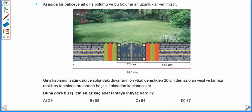Aşağıda bir bahçeye ait giriş bölümü ve bölüme ait uzunluklar verilmiştir. Giriş kapısının sağındaki ve solundaki duvarların ön yüzü genişlikleri 20 cm'den az olan yeşil ve kırmızı renkli eş tahtalarla aralarında boşluk kalmadan kaplanacaktır. Buna göre bu işin en az kaç adet tahtaya ihtiyaç vardır? Giriş kapısı 120 cm, sağındaki kısım 510 cm ise 120 ile 510'u topladığımızda 630 yapar. 990 cm'den 630 cm'yi çıkardığımızda giriş kapısının sol tarafındaki kısım 360 cm olarak bulunur.